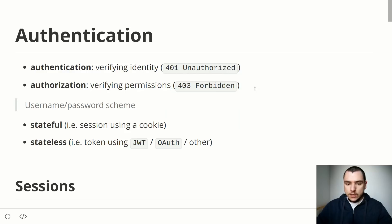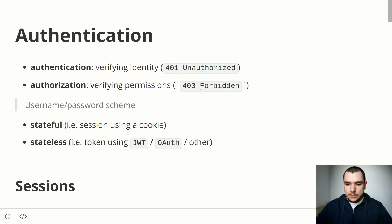Because of that distinction, the HTTP status codes are also going to be different. For failed authentication the status code would be 401 Unauthorized — even though we're talking about authentication, the status text is 'Unauthorized' but the status code is 401. For failed authorization the status code would be 403 and the status text would be Forbidden.